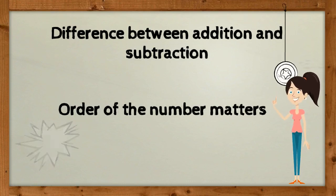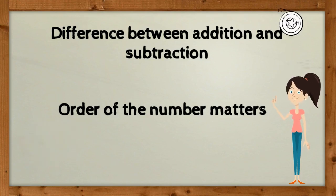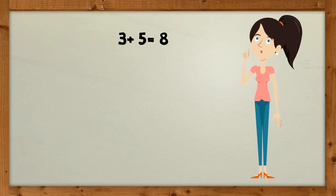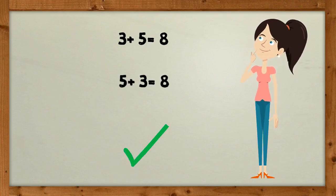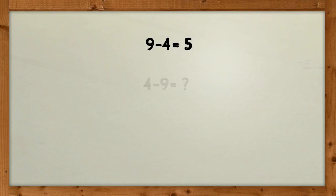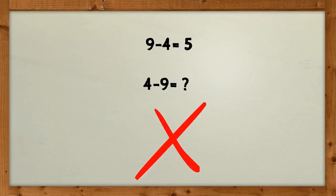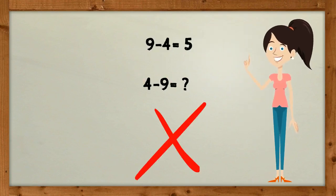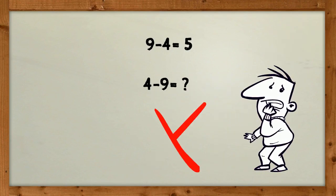The difference between addition and subtraction is that in subtraction, when we are taking away numbers, the order of the numbers matters. With addition you can switch the numbers and still get the same result — for example, 3 plus 5 equals the same as 5 plus 3. But we can't say the same thing for subtraction: 9 take away 4 equals 5, but 4 take away 9 does not give the same answer.